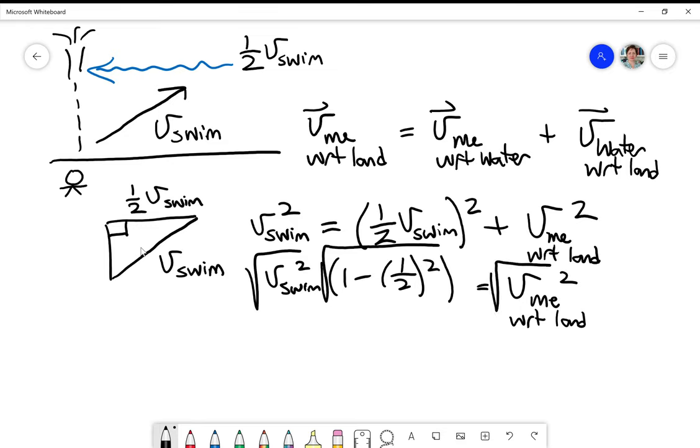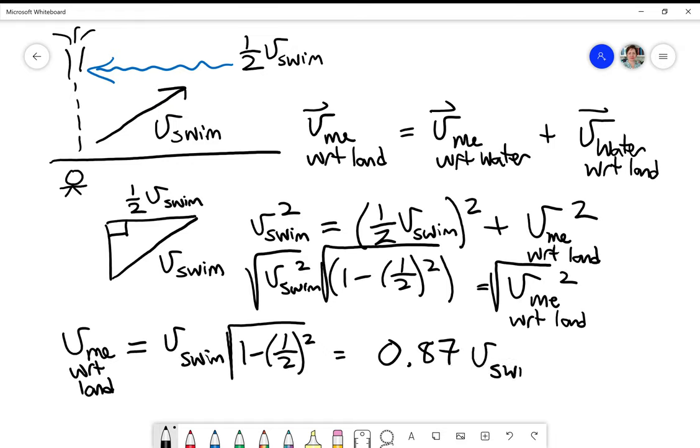What I'm left with is that V of me with respect to the land is equal to the V of me swimming times the square root of one minus one half squared, which when I punch into my calculator is 0.87 V of me swimming. And that's the answer.